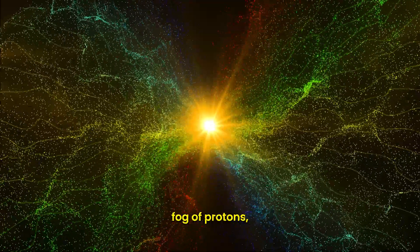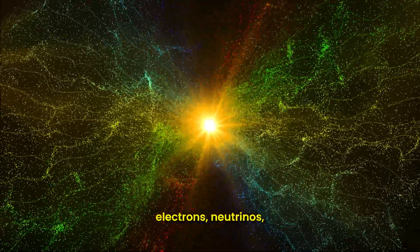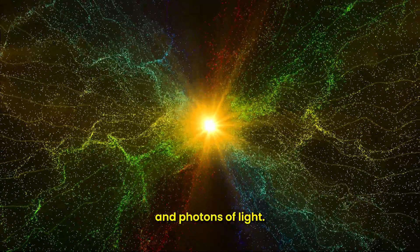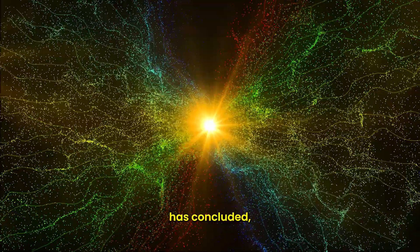It's a dense, opaque fog of protons, neutrons, electrons, neutrinos, and photons of light. The great annihilation between matter and antimatter has concluded, leaving behind the tiny surplus of matter that will go on to form everything we see.